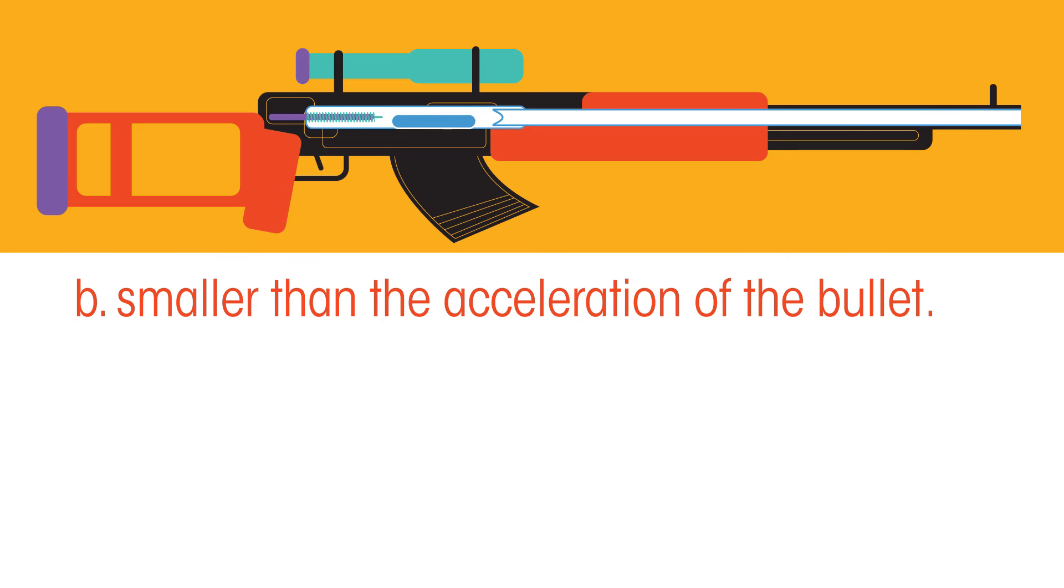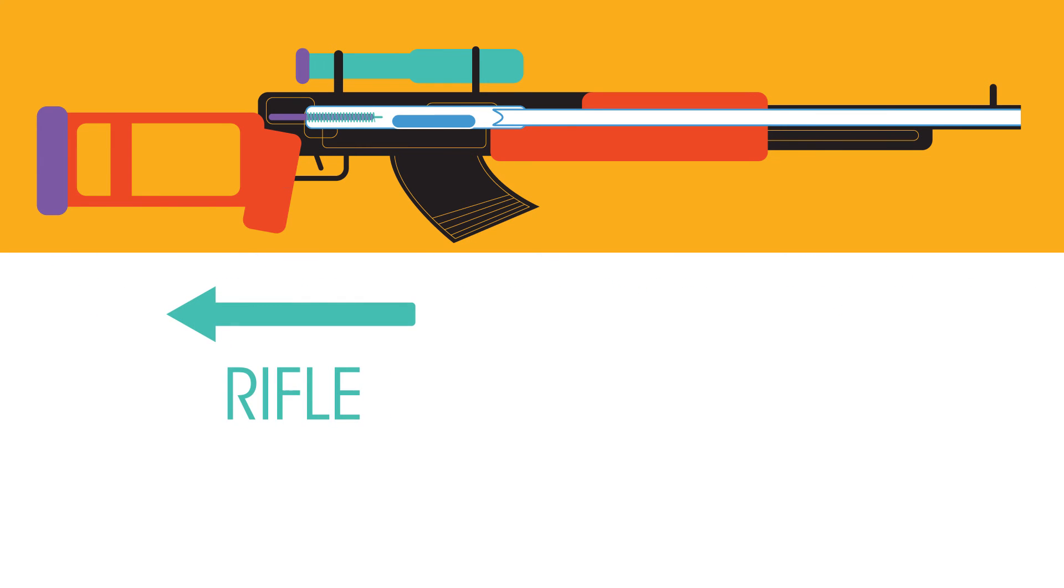The answer is b. The force on the rifle equals the force on the bullet, yet acceleration depends on both force and mass. The bullet has a greater acceleration due to the fact it has a smaller mass. Remember, acceleration and mass are inversely proportional.